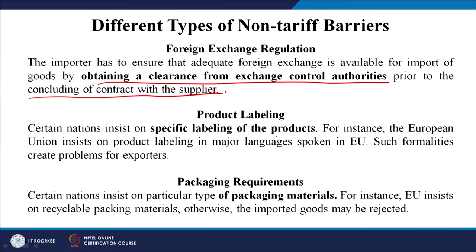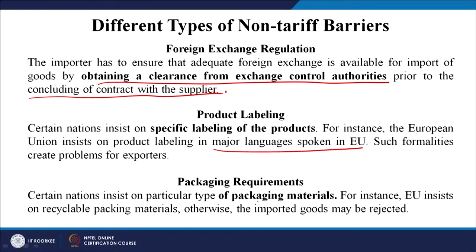The next non-tariff barrier is labeling of products. Certain nations insist on specific labeling — for instance, the European Union insists on product labeling in major languages spoken in the EU. Such formalities create problems for exporters who are unfamiliar with the language and customs. Packaging is another barrier — certain nations insist on particular types of packing materials. For instance, the EU insists on recyclable packaging material; otherwise imported goods may be rejected.